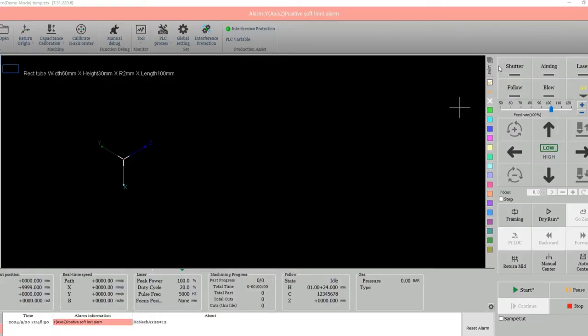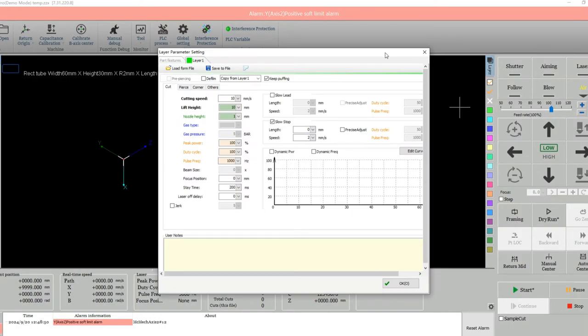First, we can try to enable the slow stop to see whether it's getting better. Without changing any data, the comparison of the effects of adding and not adding the slow stop is here.